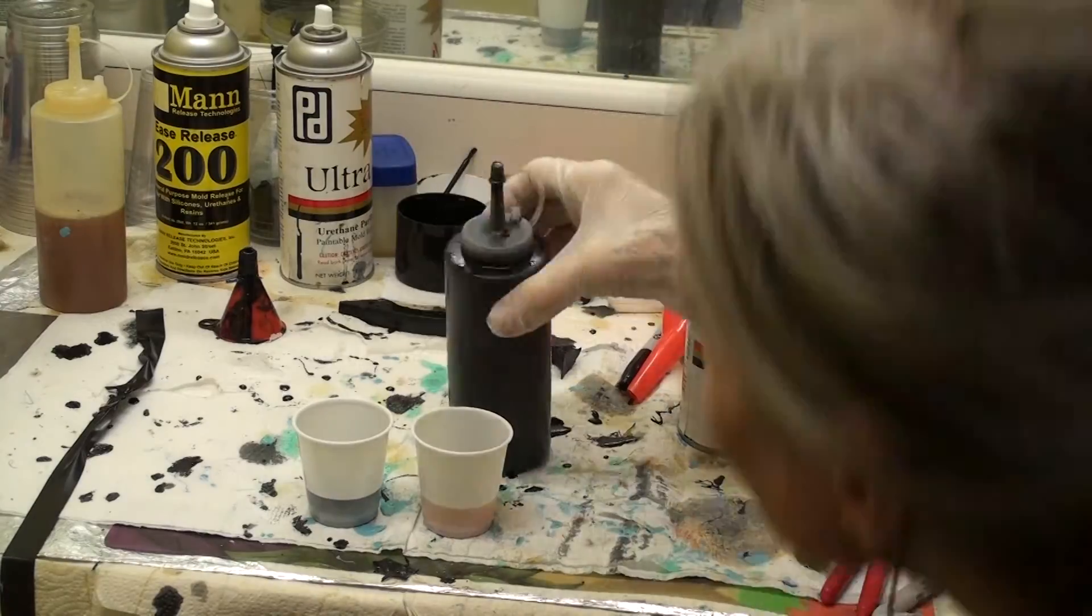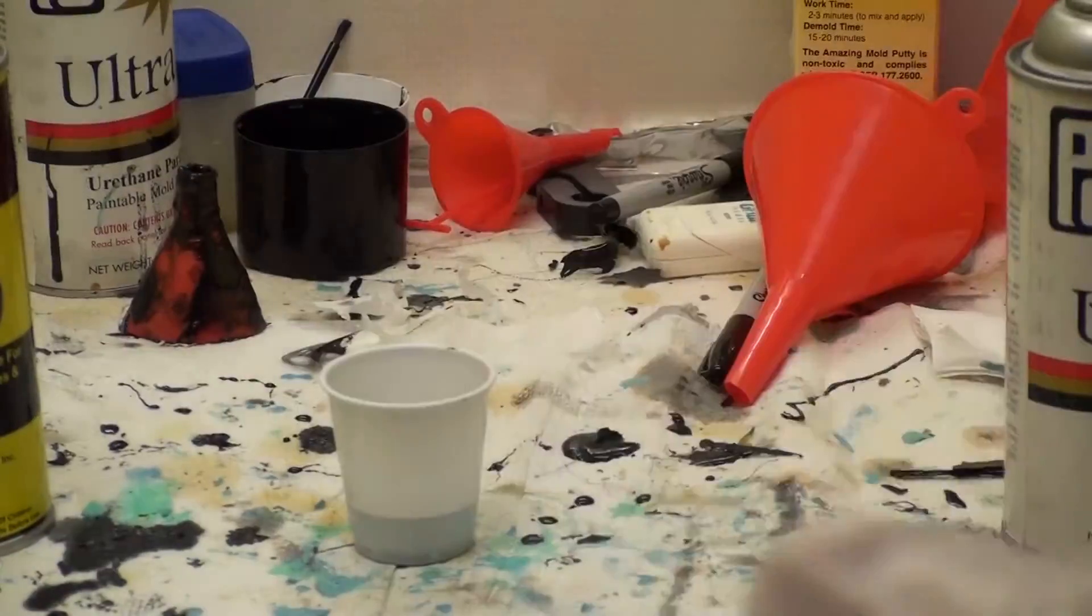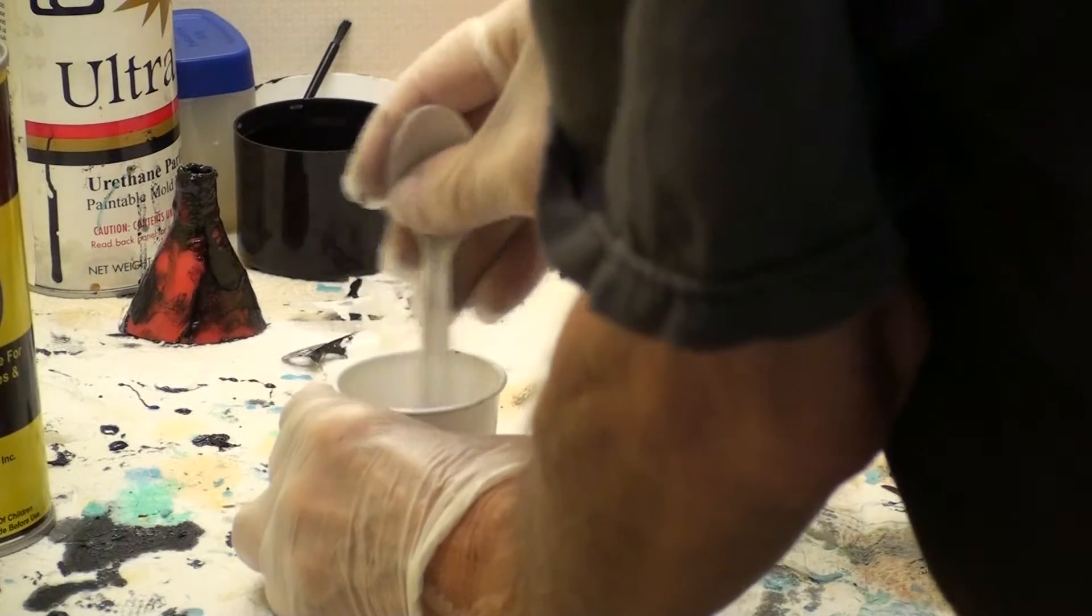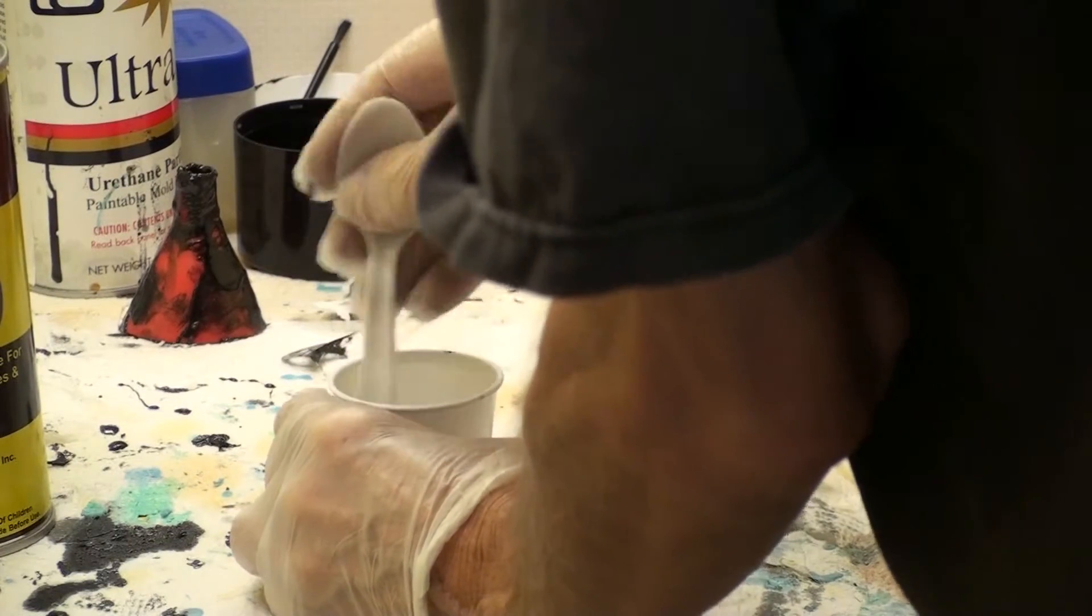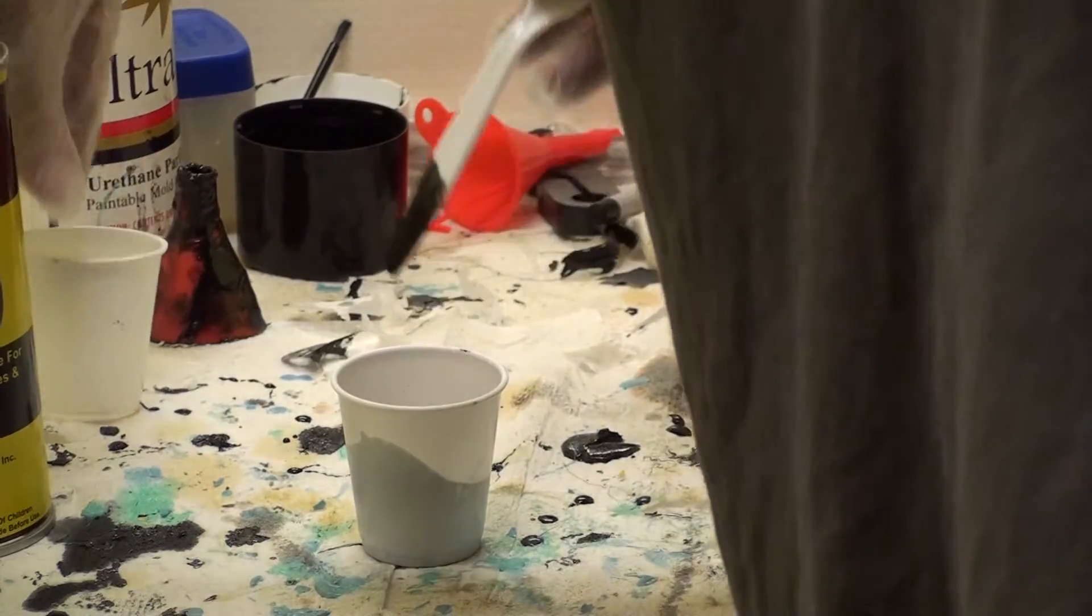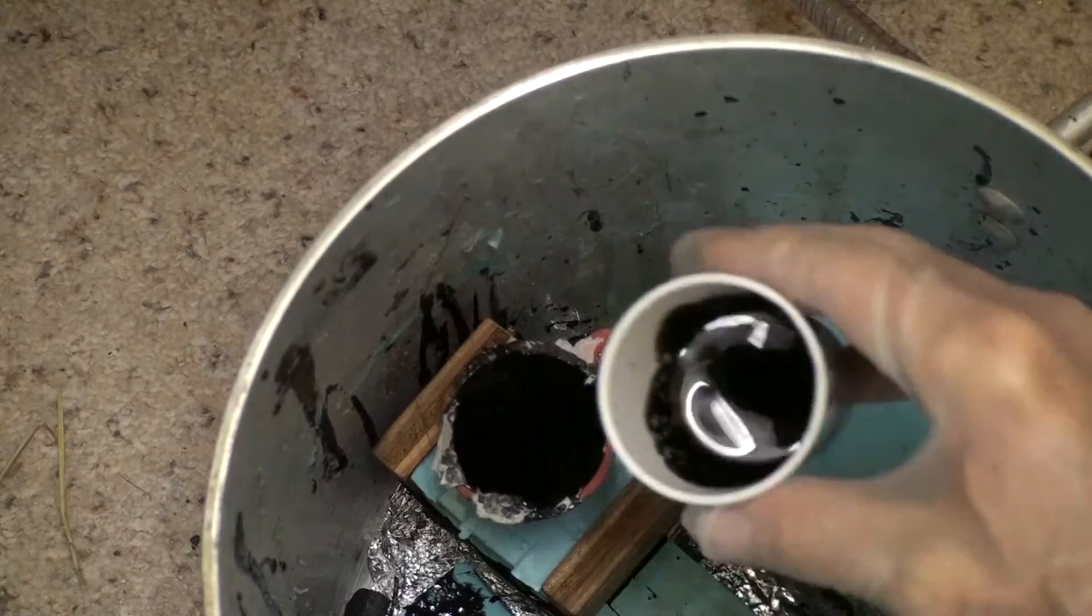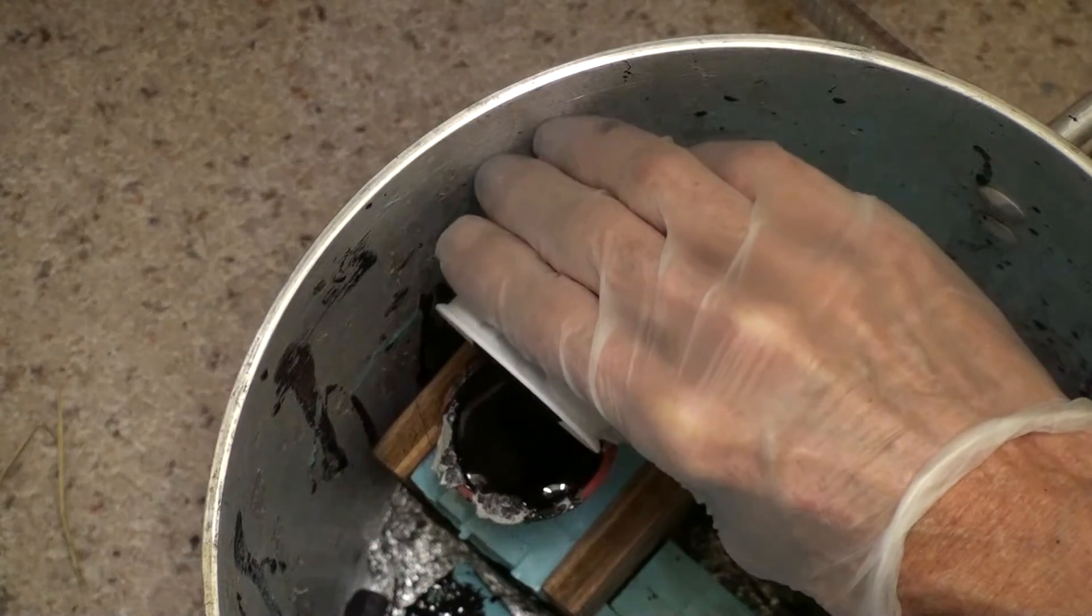Here I'm mixing equal halves of resin, which again is a one to one mix. I get this from Reynolds Advanced Materials. And this is called Onyx resin. They have slow and fast. And if you're just starting out, get the slow because the fast is a real race.